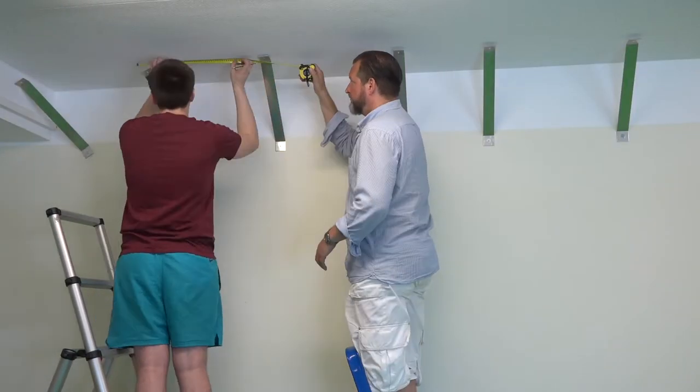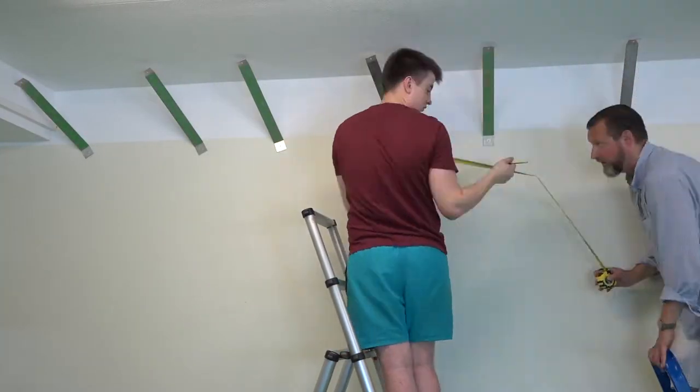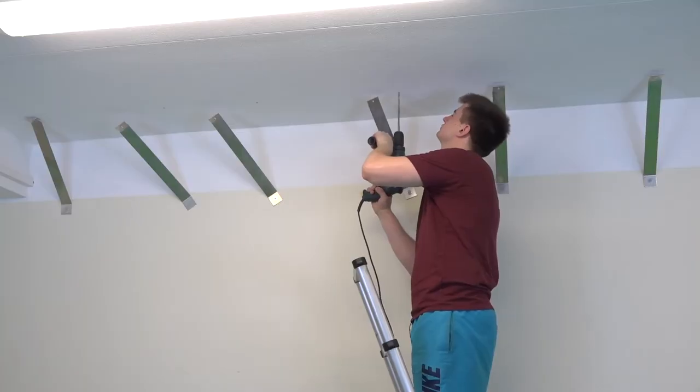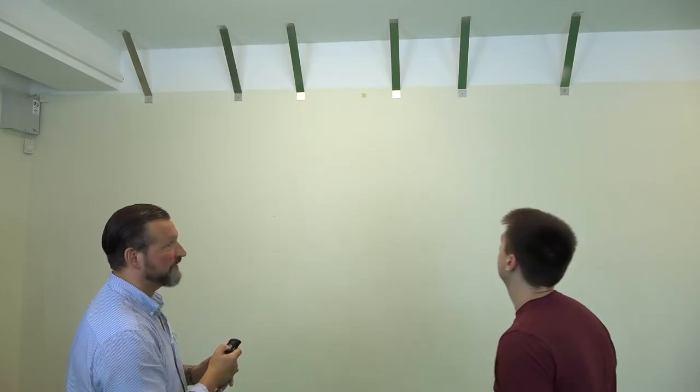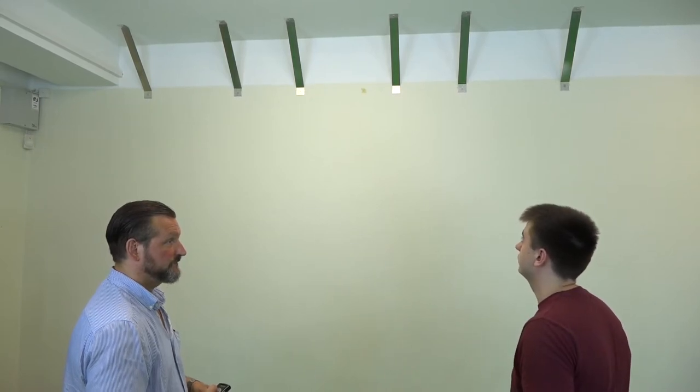And then we basically measured again 17 and a half, plus the 2.6 from the cable covering part. And then again 60, 40, 60, 40, 60. And pretty much just repeated the process that we did on the wall.